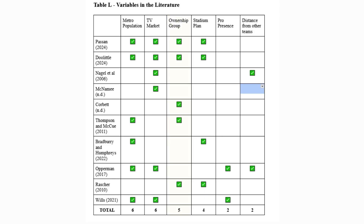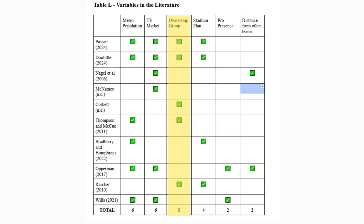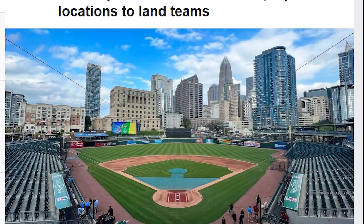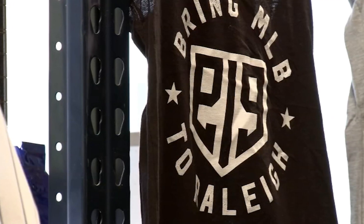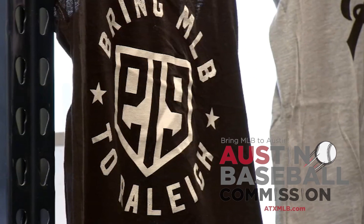One of the variables that appeared many times within the literature was the presence of an ownership group plan being in place. However, as a yes-no question, there's no raw numerical value that can be assigned. The way I'll be quantifying this is using a method from Evan Opperman's study, in which dummy variables were used — a way that qualitative data is quantified by assigning a numerical value to the presence of a variable, and a value of zero if the variable is absent. Ownership groups appeared five times in literature and will receive a weight of five. To answer this for each city, I'll be using Bradford Doolittle's 2024 ESPN article, which covers whether there's an ownership thought or plan in place.